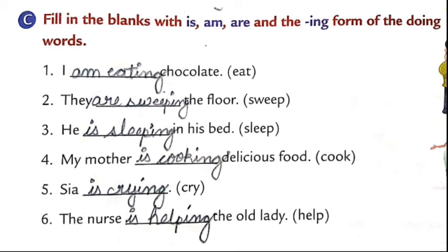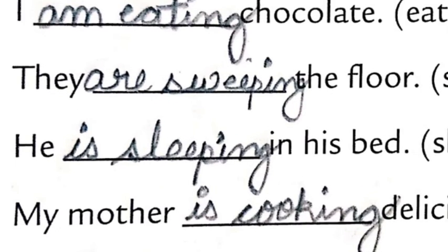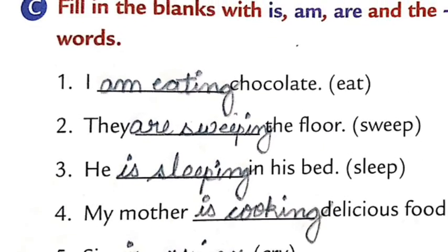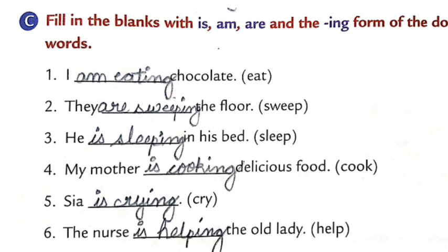The second one: they — it's a plural pronoun, so we use are, and adding ing to the verb gives sweeping — they are sweeping the floor. The third one: he dash in his bed — he is a singular pronoun, so we use is. From the bracket we add ing to get sleeping — he is sleeping in his bed. Similarly: my mother is cooking delicious food, Siya is crying, the nurse is helping the old lady.